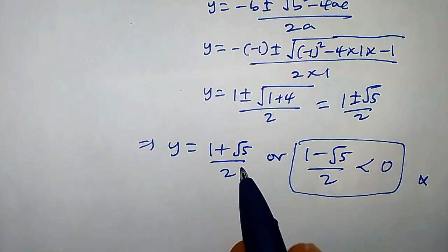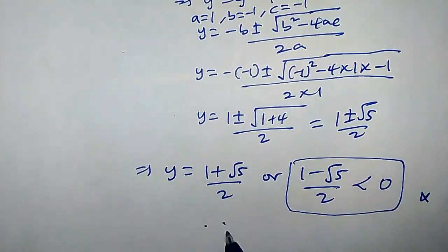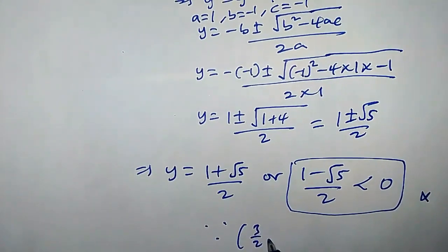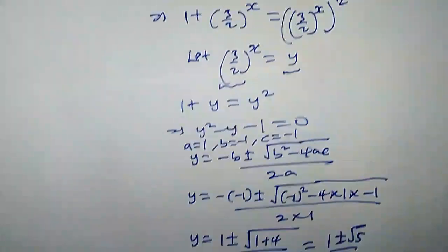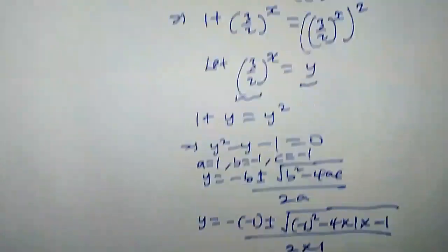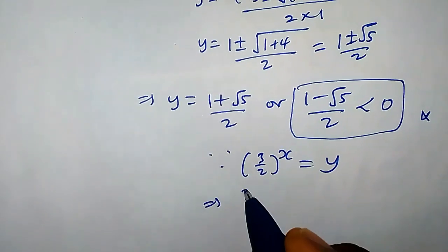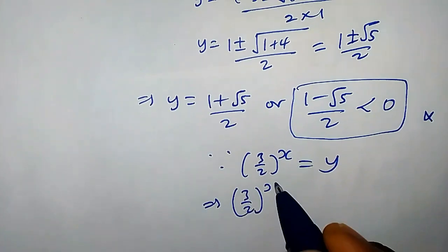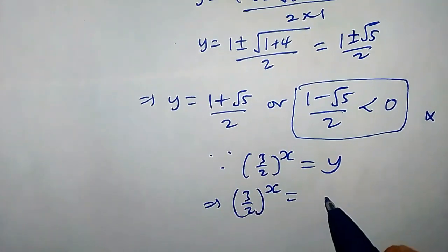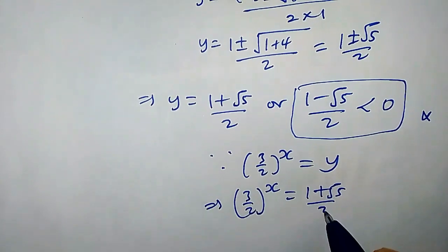So let's consider when y equals (1 plus √5)/2. Since (3/2)^x equals y, that is from our substitution, this implies that (3/2)^x equals the golden ratio, which is (1 plus √5)/2.